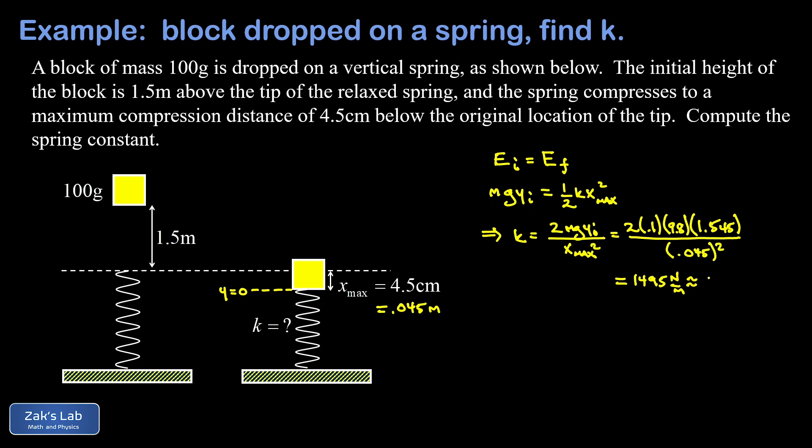This gives me about 1495 newtons per meter for the spring constant. We traditionally round to three significant digits. So if we write it that way, it's about 1500 newtons per meter.